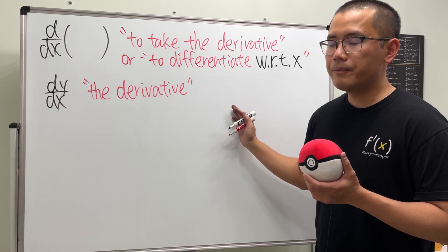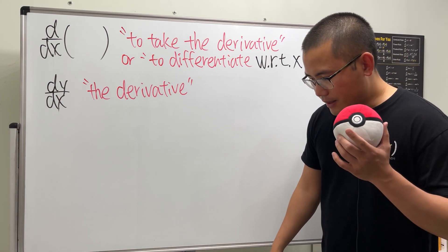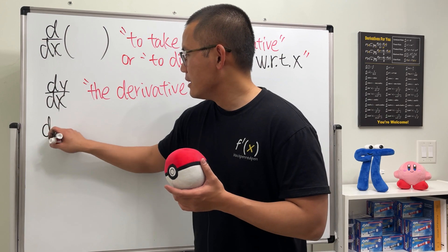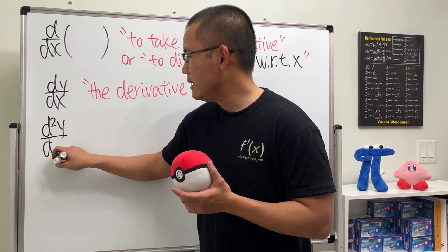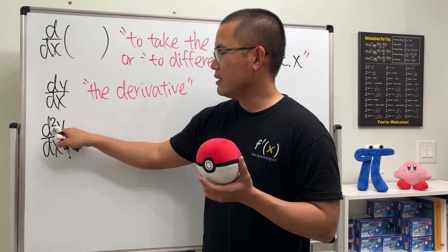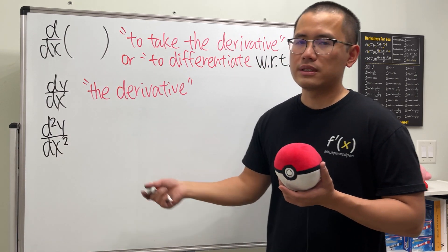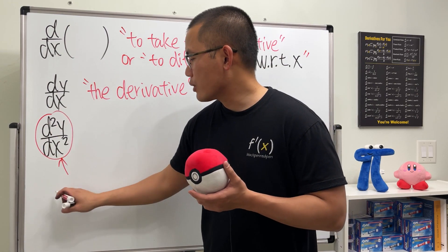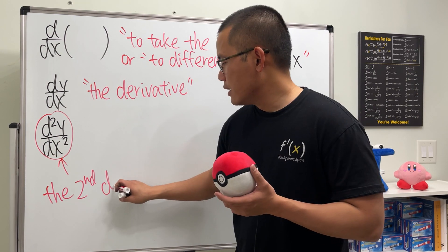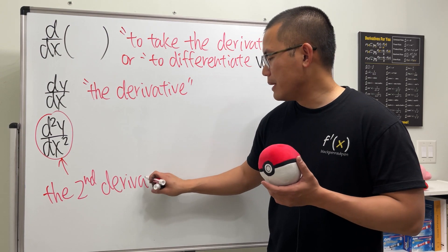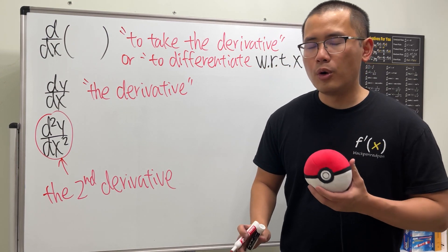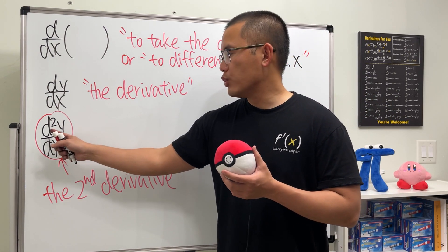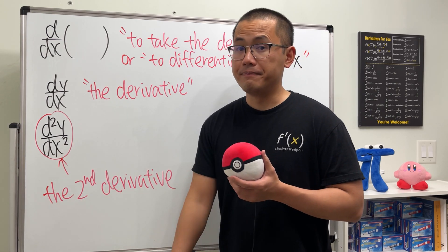Hopefully these two are not so bad. I will show you guys an example right here with actual functions. The most confusing one I will say is this d²y/dx². And maybe you can see d³y/dx³, etc. Let me first tell you this right here represents the so-called second derivative. This is not so bad, but I know a lot of people have been wondering why the notation is like this. Why do we put a two right here and also put the two right here?